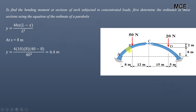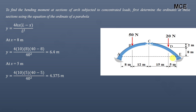At x equals 8 meters (to find the ordinate at point B): y equals 4 into 10 into 8 into (40 minus 8) divided by 40 squared, which equals 6.4 meters. So the ordinate at point B is 6.4 meters. Similarly, at point D we take x from point E, so at x equals 5 meters: y equals 4 into 10 into 5 into (40 minus 5) divided by 40 squared, which equals 4.375 meters. This is the ordinate at point D.